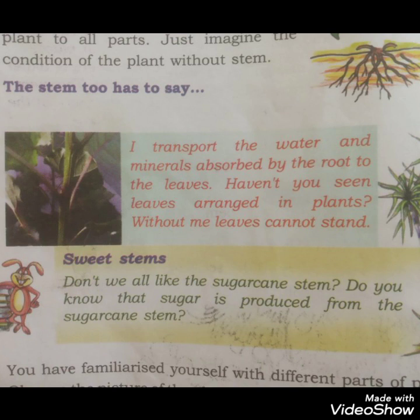Sweet stems — sugar cane is a sweet stem we use as food.